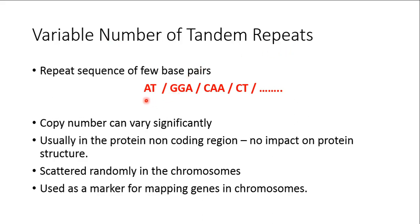What are tandem repeats in the DNA? It's been found that certain base pairs tend to repeat themselves multiple times in the DNA — like AT, GAA, GGA, CAA, CT — it could be any pattern. There could be just one copy of this, or at a stretch you could get 10 repeats of AT AT AT, or 10 repeats of GGA GGA GGA. These are called tandem repeats.